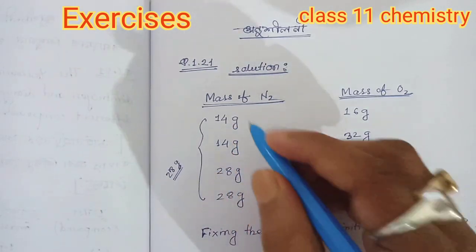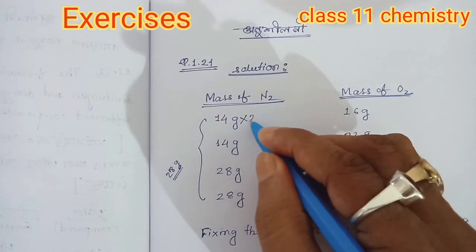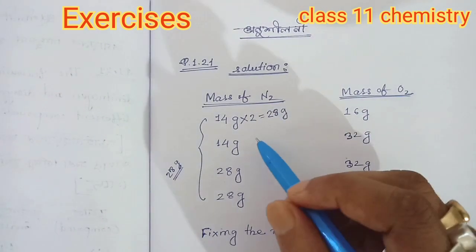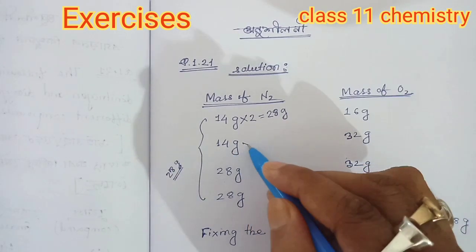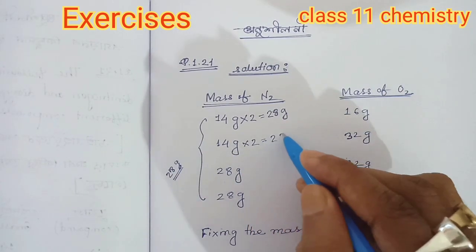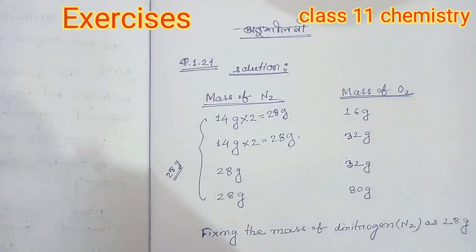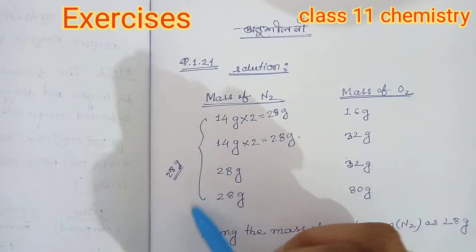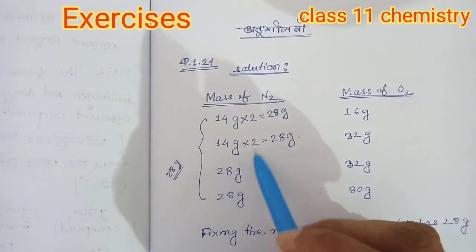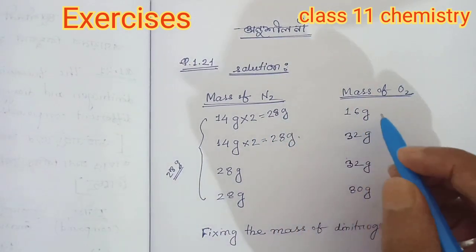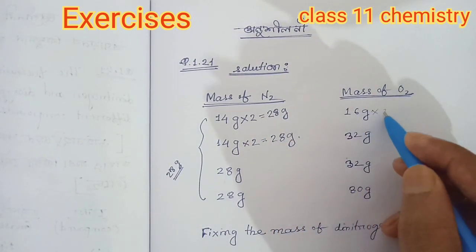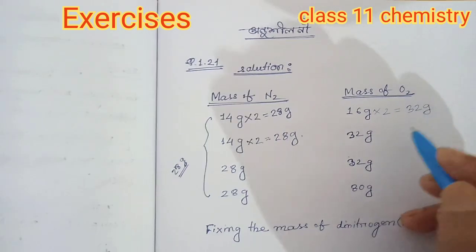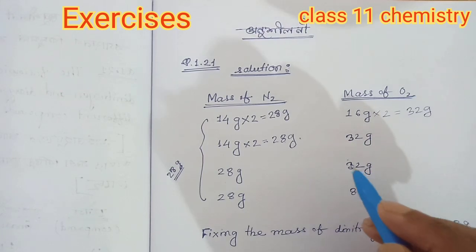So the mass of oxygen: how much? 28 grams. And this mass of oxygen is 28 grams. Then the mass is 20 grams. The mass of oxygen is the same. When you can save the mass of oxygen, this is 24 grams.